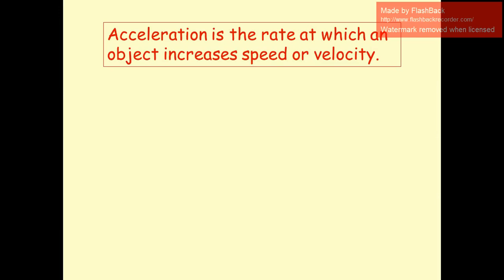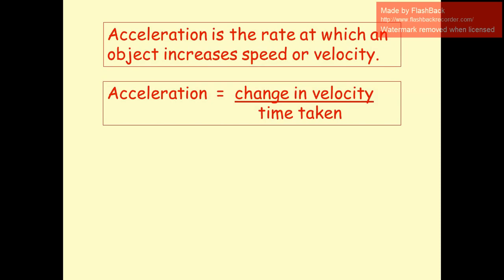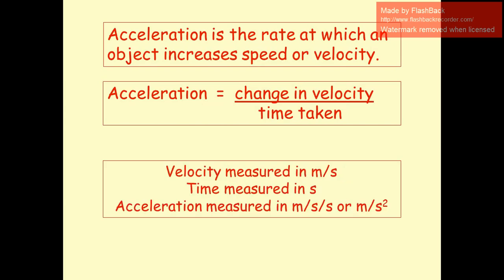Acceleration is the rate at which an object's velocity increases. It is given by the equation: change in velocity divided by time taken. If an object starts with initial velocity u and reaches final velocity v during time period t, then acceleration equals (v minus u) divided by t. Velocity is in meters per second and time in seconds, so acceleration units are meters per second divided by second — or meters per second squared.